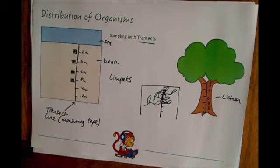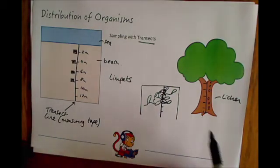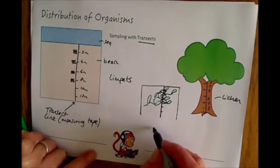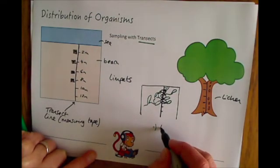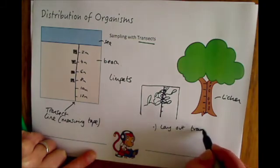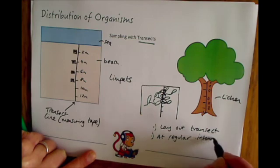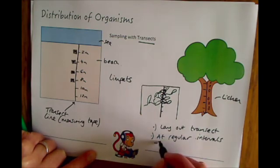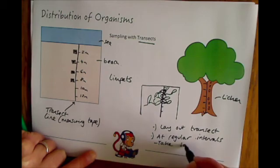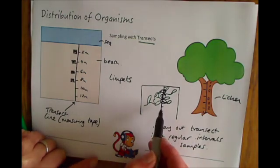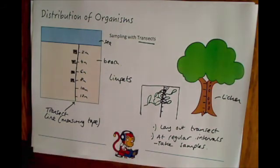So different from random sampling, these are called transects. They can be vertical or horizontal and are used to measure loads of different things. But the main points are: you lay out your transect, which is just a piece of measuring tape, and then at regular intervals—that means regular gaps between your measurements—you take your samples. It depends on what you're doing; it could be measuring leaf size or counting the number of organisms in that patch.